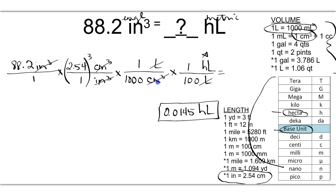You should note that when we went from centimeters cubed to liters, since both of those units are not being cubed in that step, we did not cube the numbers. You only cube your numbers when both units — top and bottom — are cubed.